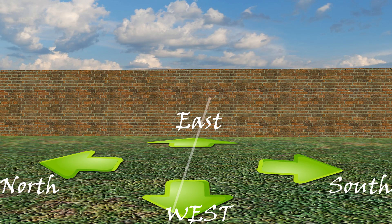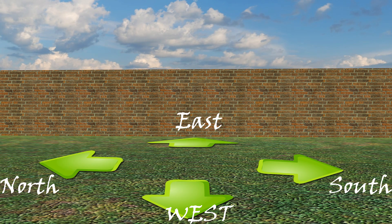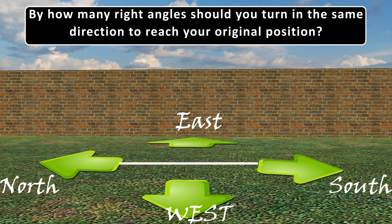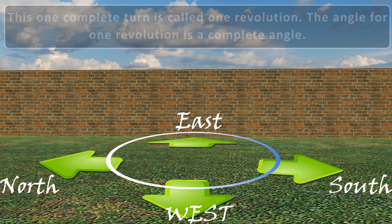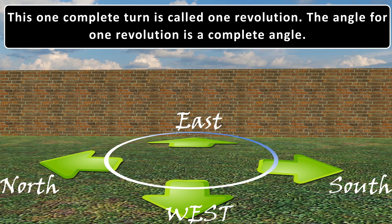Again, to turn from south to north, you took another straight angle turn in the same direction. Thus, turning by two straight angles, you reach your original position. By how many right angles should you turn in the same direction to reach your original position? We can say turning by two straight angles or four right angles in the same direction makes a full turn.